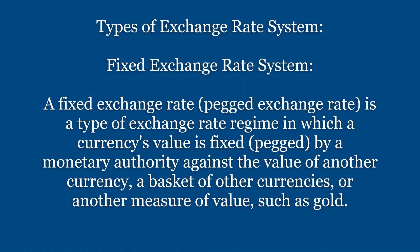The first one is the fixed exchange rate system. Under this system, the exchange rate will be fixed. Who will be fixing it? The exchange rate will be fixed by the central bank of that particular country. For example, in India, RBI will be fixing the rate — 1 US dollar equal to 60 rupees.